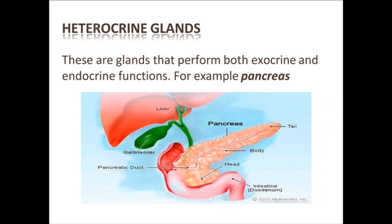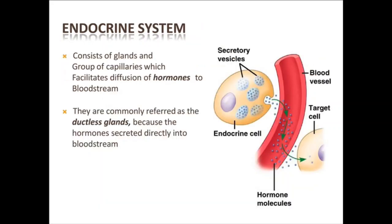The third type is heterocrine glands. Heterocrine glands perform both exocrine and endocrine functions. These are glands that perform both exocrine and endocrine functions in our body. An example of heterocrine glands is the pancreas. In this diagram, we can see that the pancreas acts both as an exocrine and an endocrine gland.